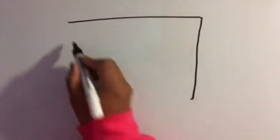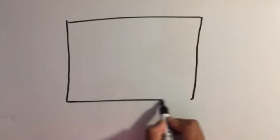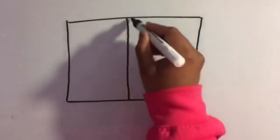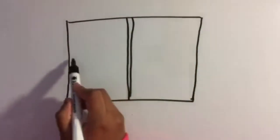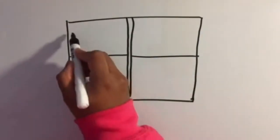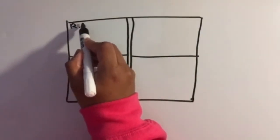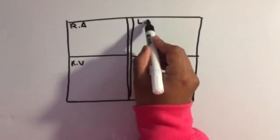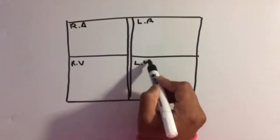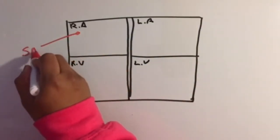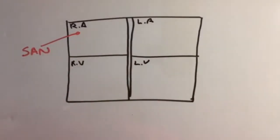For the sake of this explanation, we're going to represent the heart as a box with four compartments. The SAN is located in the walls of the right atrium. The SAN acts like a pacemaker of pacemakers.